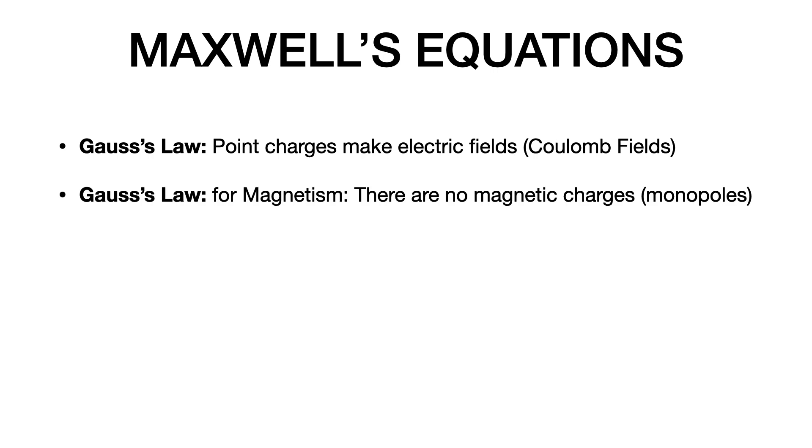The next is Gauss's law for magnetism. This is the same thing. It deals with magnetic flux over some closed surface. It says that the magnetic flux over a closed surface is zero because there's no magnetic monopoles that we've found so far. If you watch Big Bang Theory, they were looking for magnetic monopoles. We might find them one day.